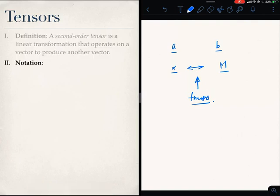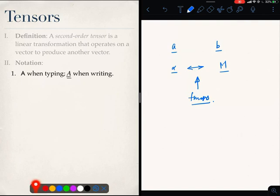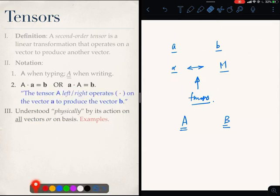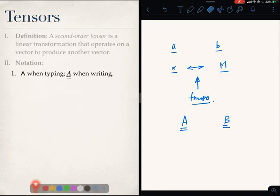All right, so how do we write tensors? Well, I have already given you a hint. They are written like this when I am typing, which is hard to do when I am writing. So when I am writing, I am going to use a double underline symbol. So this will be a tensor, that will be a tensor, even this can be a tensor, as long as there are two underlines beneath it. All right, so that is the notation.